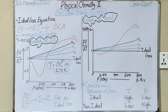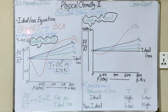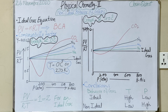So why do all real gases not obey this equation PV = nRT? Actually, the ideal gas equation is based upon the kinetic molecular theory, and we know that there are two faulty assumptions in the kinetic molecular theory which do not hold good at low temperature and high pressure. In order to account for these two faulty assumptions, we have to discuss the compressibility factor.